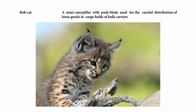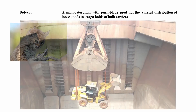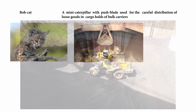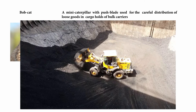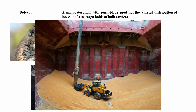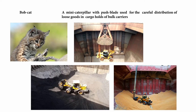It would be nice if this cat were on the vessel, but on the ship a bobcat is a mini Caterpillar with a push blade, used for the careful distribution of loose goods in the cargo hold of bulk carriers.